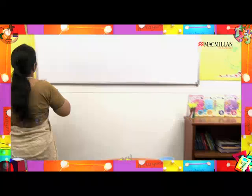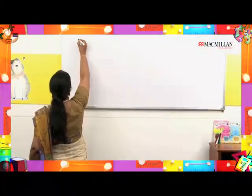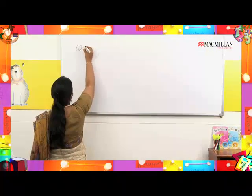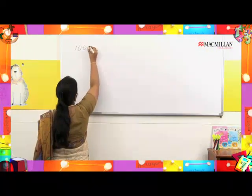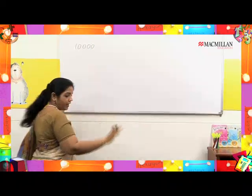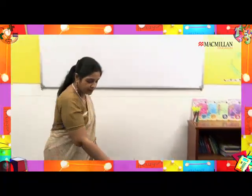Hello children, today we are going to do something very interesting. You are aware of 4-digit numbers; now we are going to meet 5-digit numbers today. The smallest 5-digit number is 10,000, and we have our abacus here.